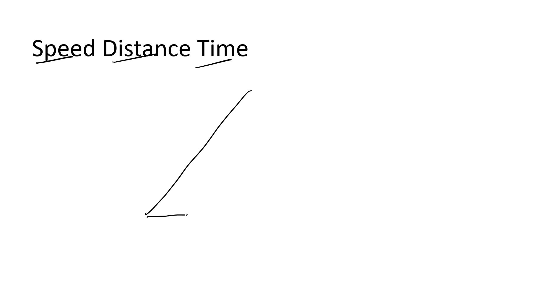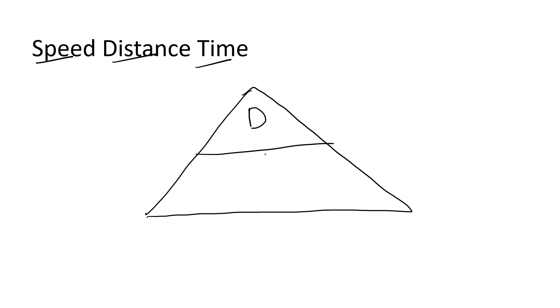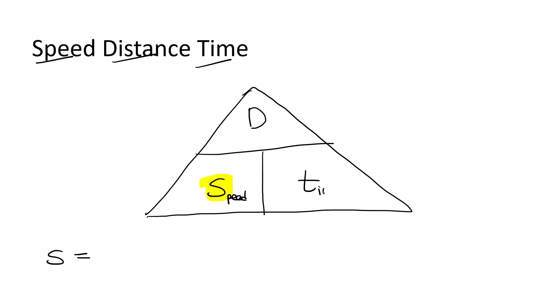To remember all of the formulas, I just want you to draw a triangle for yourself. At the top of the triangle, you put D for distance, and then at the bottom you've got speed and time. It doesn't matter if you switch those two around, but most teachers will probably do it like that. The S stands for speed, T stands for time, and D stands for distance.